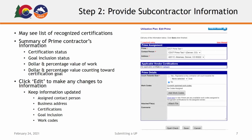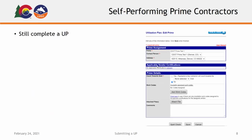To edit any information in this section, click the Edit link to the right of the prime contractor's summary. Here, you can update the prime contractor's information, including the assigned contact person, the business address, any applicable certifications, any applicable work codes, attach any desired files or documents, and add any desired comments.